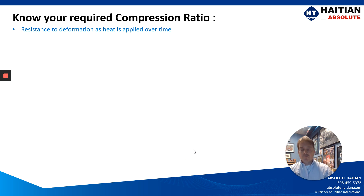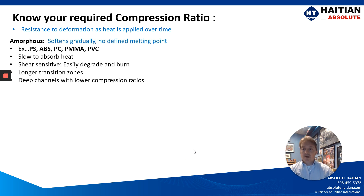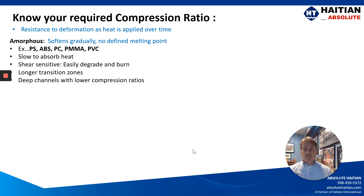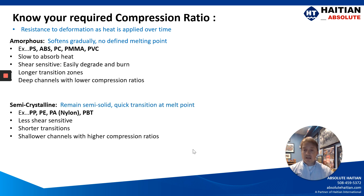Know your compression ratio. Amorphous materials soften gradually — they have no defined melting point, they're slow to absorb heat, and they're shear sensitive. They require longer transition zones and deeper channels with lower compression ratios on the screw. Whereas semi-crystalline materials remain semi-solid until they hit a quick transition point — they have shorter transition zones, shallower channels, and higher compression ratios.